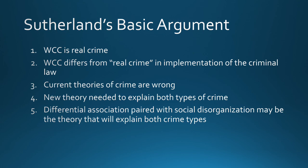What was Sutherland's basic argument? White-collar crime is real crime. Not only is it real crime, but it differs from street crime in the implementation of criminal law — those in power make the laws, so white-collar crime differs because those in power don't allow implementation to take place. He also suggests that current theories of crime are wrong, and a new theory is needed to explain both types of crime. Differential association paired with social disorganization may be that new theory. When we come back, we'll see what others who argued with Sutherland thought, and whether they thought he was wrong in his definition of crime.